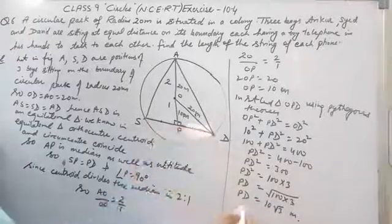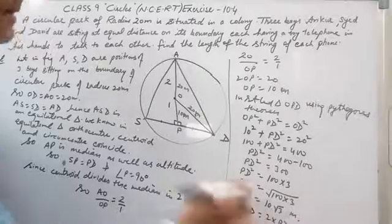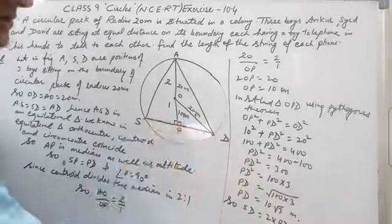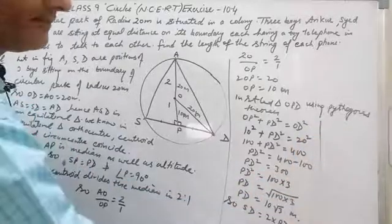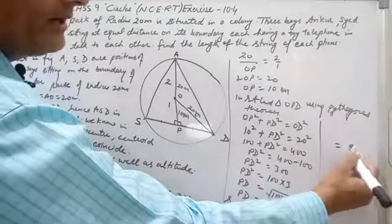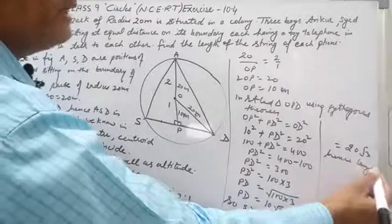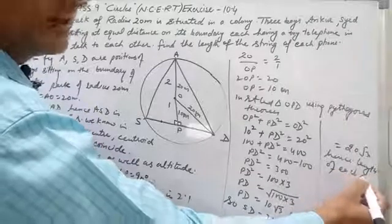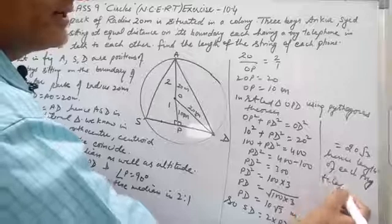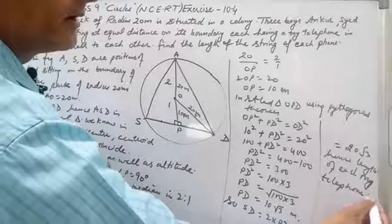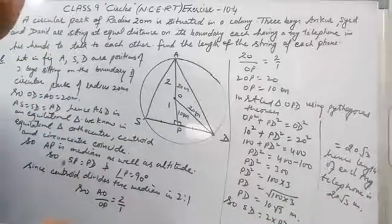Hence we can find SD as well. SD equals 2 times PD because SP equals PD. So SD equals 2 times 10√3, which equals 20√3 meters. Hence the length of each toy telephone string is 20√3 meters. Thanks for watching.